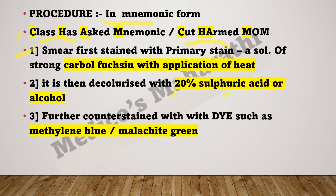Further, it is counter-stained with a dye such as methylene blue or malachite green. In the mnemonic, 'M' stands for methylene blue or malachite green. So the final step is: after decolorizing with acid or alcohol, we counter-stain with methylene blue or malachite green.